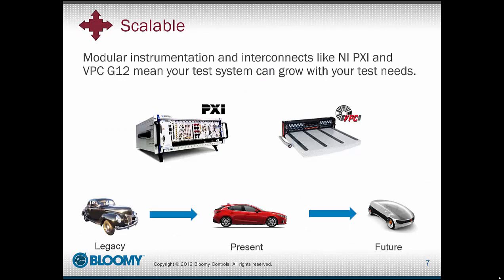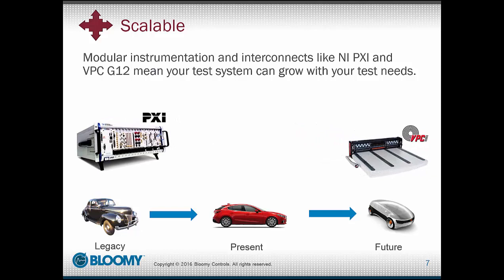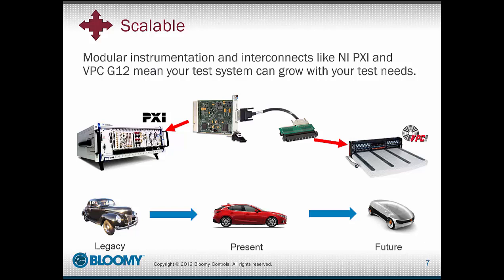Universal test systems allow you to scale your testing needs to meet a changing environment. This is due to the modular nature of the instrumentation and interconnects. As test requirements, products, and processes change, test equipment can be managed to meet all of your testing needs from legacy products to present designs through future ideas yet to be developed. Blume's UTS utilizes NI-PXI as the instrumentation base and a Virginia Panel Corporation G12 as the mass interconnect. Both of these are highly modular, allowing your test system to scale to the ever-changing needs of your manufacturing test environment. Because most of these interfaces are plug-and-play, adding a new instrument is as easy as plugging a new PXI card into the PXI chassis, attaching a new G12 module to the receiver, and connecting an off-the-shelf cable between them.